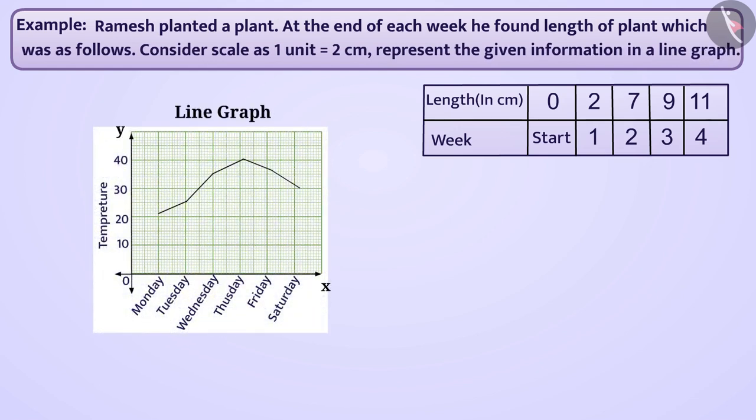A line graph represents data that changes continuously over time. Data is displayed by dots in the line graph. Now, let us draw a graph based on the information shown.